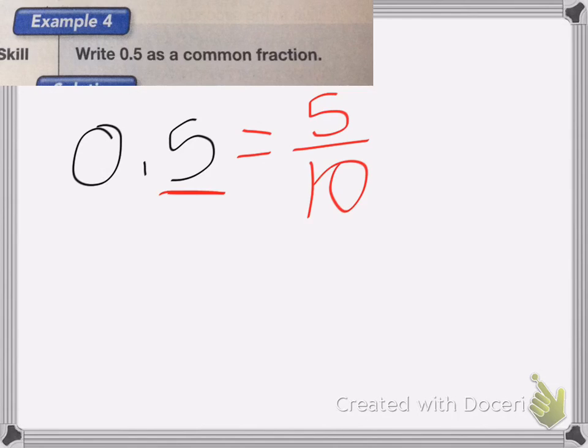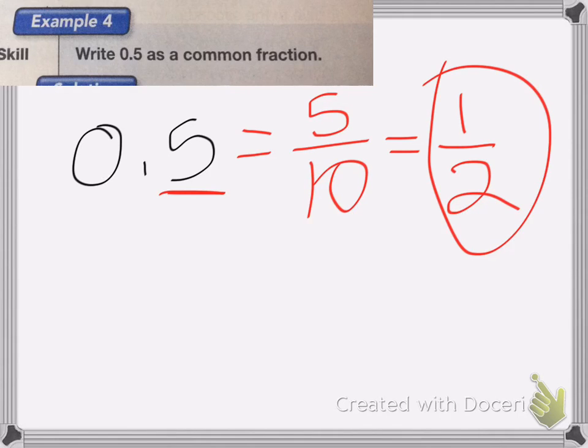And now we're going to work with writing fractions as decimals, or decimals as fractions. So we have, write 0.5 as a common fraction. Well, when we have 0.5, we need to look at what place value my 5 is in. Now my 5 is in the tenths place value. So I know this is the same as 5 tenths, which then would reduce down to 1 half. And that's my answer.